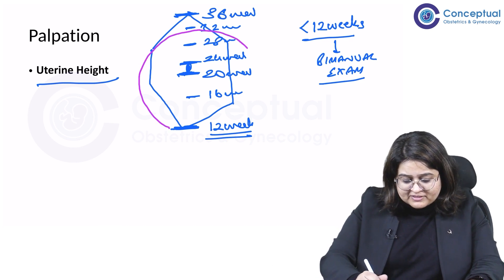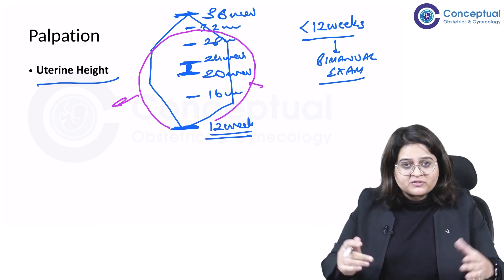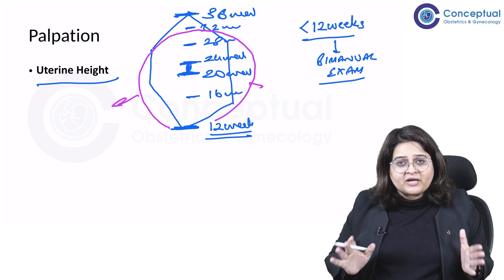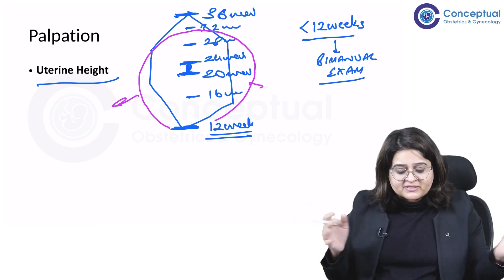What is going to happen? The flanks become full. So the uterus drops down to 32 weeks, and the flanks, when you see the flanks, the lateral part of her abdomen, you see fullness.